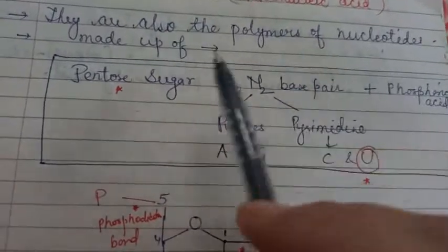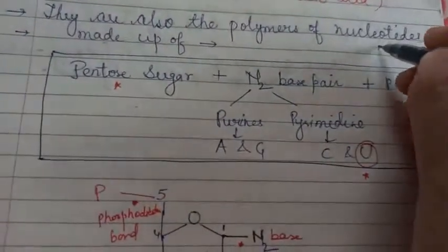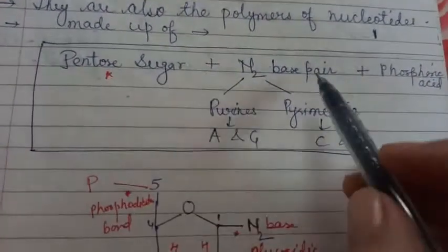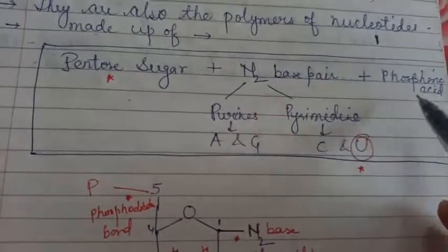A nucleotide is made up of pentose sugar. I am talking about one nucleotide. One nucleotide is made up of pentose sugar, nitrogenous base pairs and phosphoric acid.